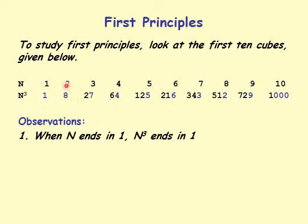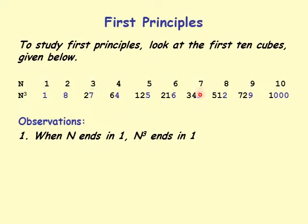Notice the symmetry here. When n ends in 8, its cube ends in 2, and 8 plus 2 is 10. When n ends in 2, its cube ends in 8, and 2 plus 8 is 10. Similarly, when n ends in 3, its cube ends in 7. When n ends in 7, its cube ends in 3 — and 7 plus 3 is 10.